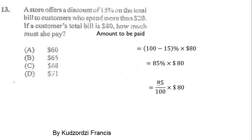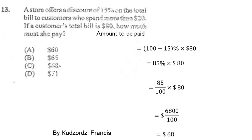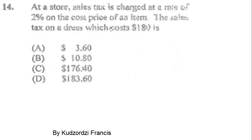That gives us 85% of 80, which is the same as 85 over 100 times 80, and that will give you the final result.